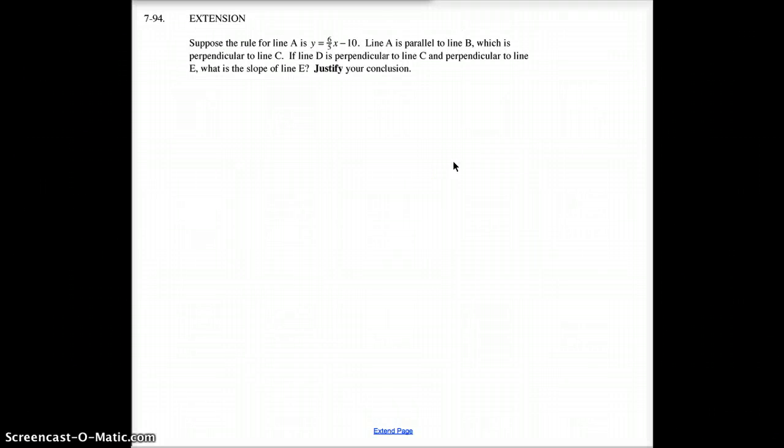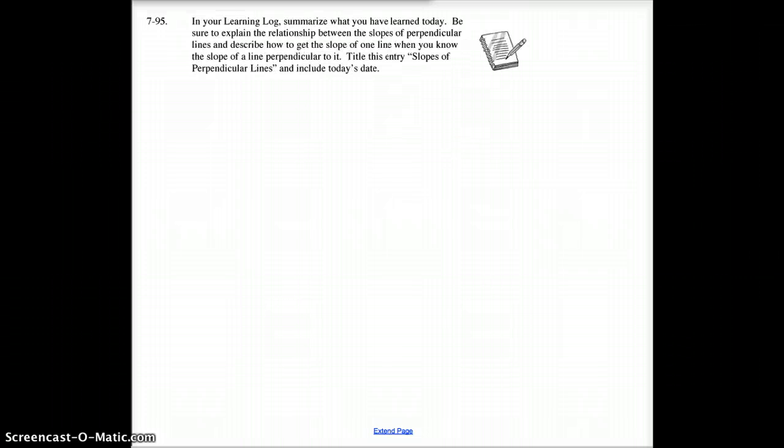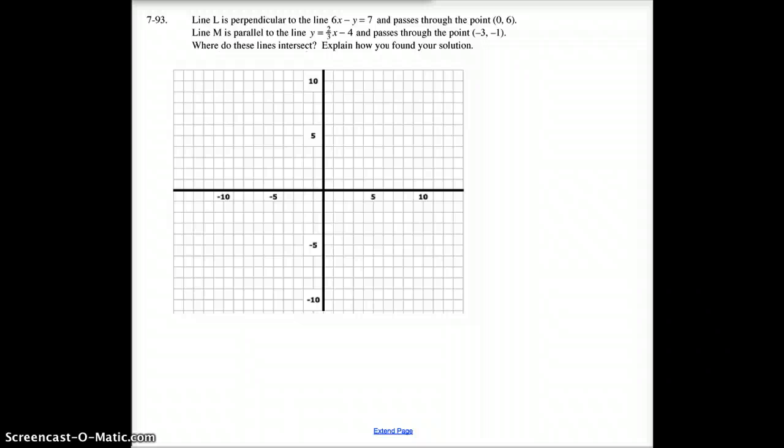Question 94. Let's see if I want you to do this. Suppose the rule for A is Y equals 6/5 X minus 10. Line A is parallel to line B. Well, that should tell you that's easy enough. Which is perpendicular to line C. If D is perpendicular to line C, and perpendicular to line E, what is slope line E? I don't really want you to do that right now. We're just going to finish up at question 93. So, once you have that, and you've got that intersection point, come on back to class. We'll see you later. Bye-bye.